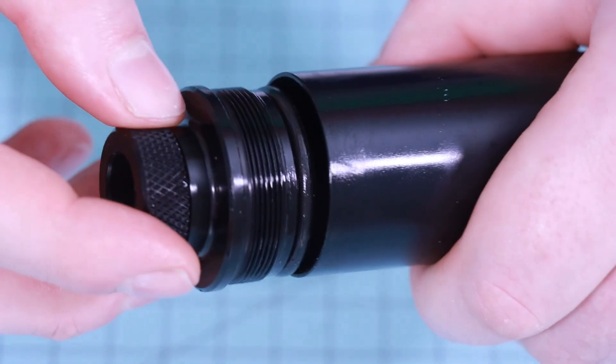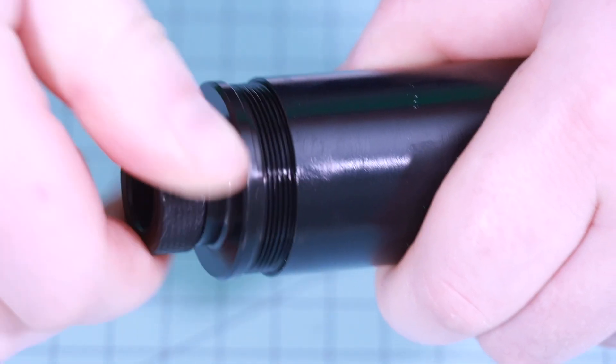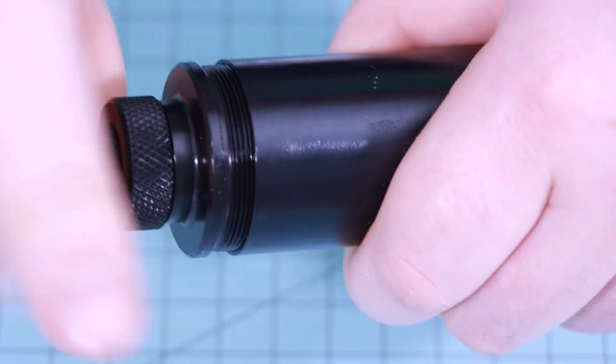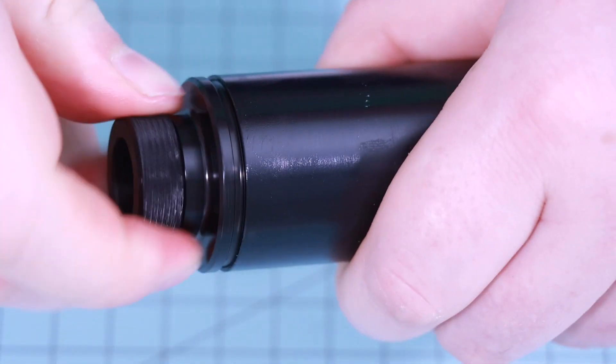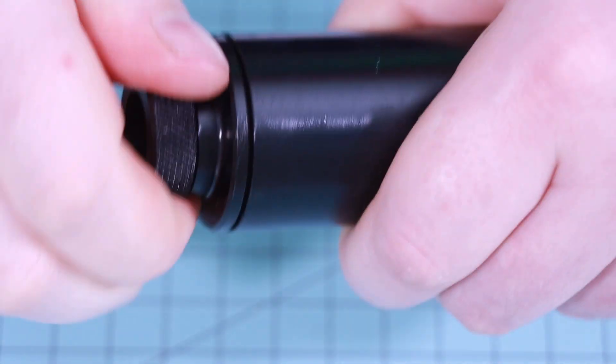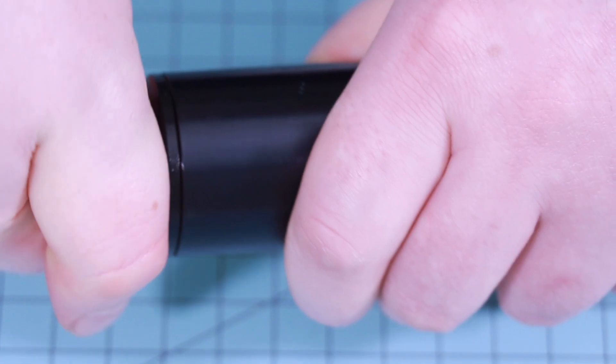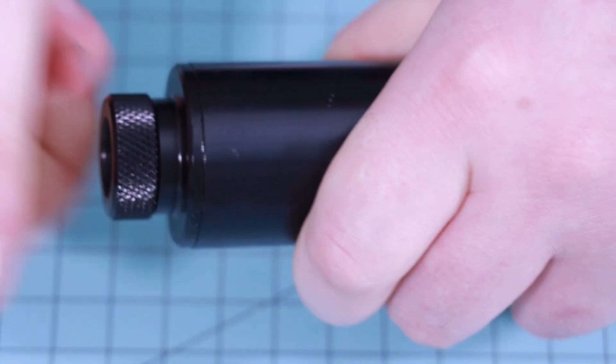Now let's screw the forward closure into the forward end of the motor. Make sure it's good and snug.